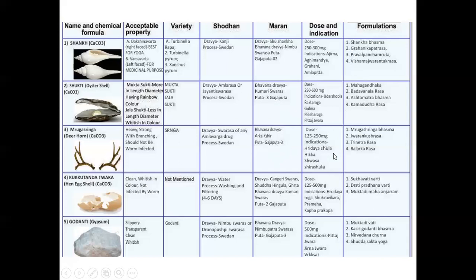Dose is 120 to 250 milligram. Indications: Hrudaya Shula — this is the best medicine for angina pectoris. Whenever the patient has dyspnea, pain in the chest, constricting feeling especially after exercise, after climbing stairs or a hill, it is indicating ischemic heart disease, less blood supply to the heart. This is a very powerful medicine to improve the tone of the cardiac muscle. Also used in angina pectoris, Hikka (hiccup), Shwasa (breathlessness), and Shirshashula. Products: Mruga Shrunga Bhasma, Jvarankusharas for fever, Trinatrasa, and Balakrasa.